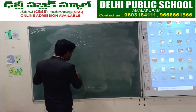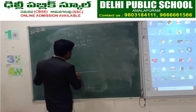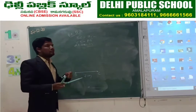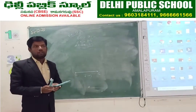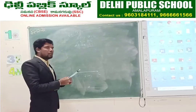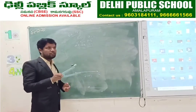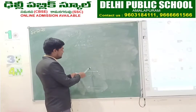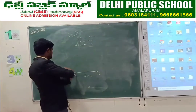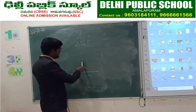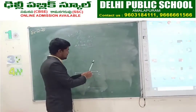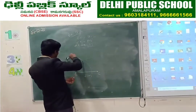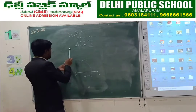First, draw line BC equal to 7 centimetres. Construct angle 75 degrees at point B. To get 75 degrees, construct 90 degrees and 60 degrees — the bisector of the sector between 60 and 90 will give 75 degrees. From this point this is 60, from this point this is 120, so here it will be 90.